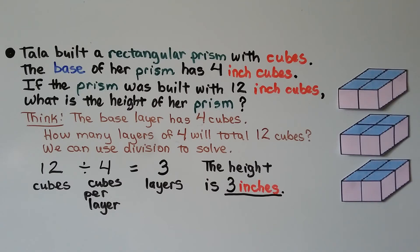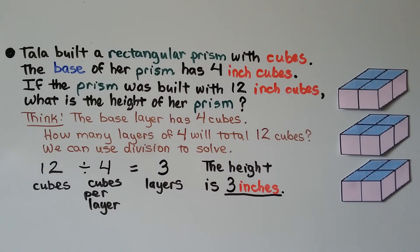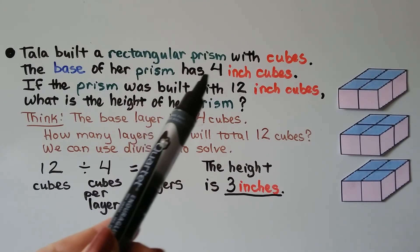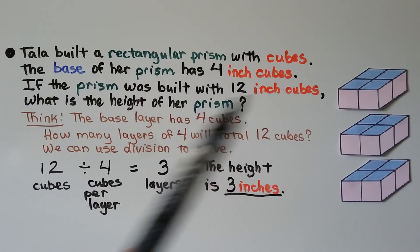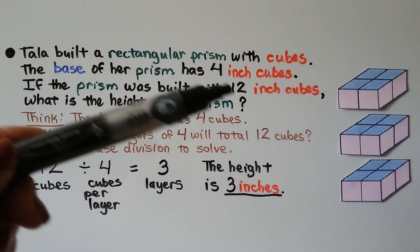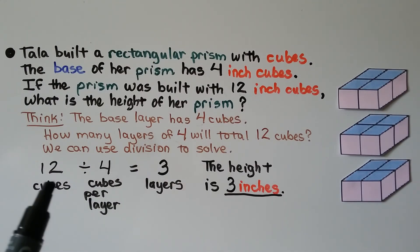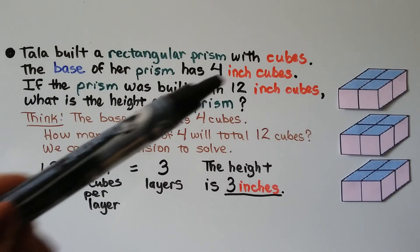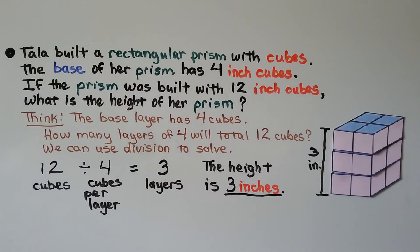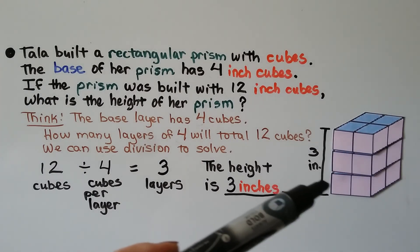Tala built a rectangular prism with cubes. The base of her prism has 4 inch cubes. If the prism was built with 12 inch cubes total, what is the height of her prism? The base layer has 4 cubes, so we ask: how many layers of 4 will total 12 cubes? We can use division: 12 divided by 4 is 3 layers. Because the cubes are 1 inch each, the height is 3 inches.